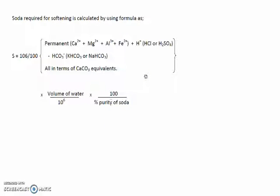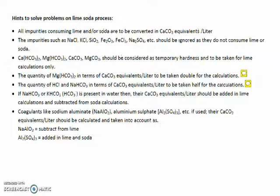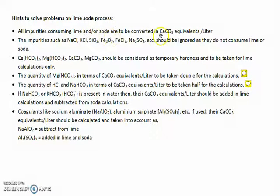We discuss these formulas in detail through actual rules or hints. Here are some hints to solve problems on the lime-soda process — one must understand these rules to solve the numericals. All impurities consuming lime or soda are to be converted first into calcium carbonate equivalents per liter. We know how to calculate calcium carbonate equivalents per liter — we learned that in lecture 2.